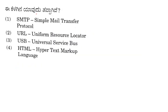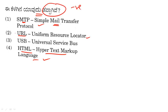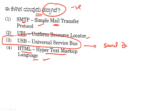The next question is about full forms. This is a complete form question. SMTP is Simple Mail Transfer Protocol. HTML is Hypertext Markup Language. URL is Uniform Resource Locator. USB — this is the one with a negative statement — USB stands for Universal Serial Bus, not Universal Service Bus. Option 3 is the right answer.